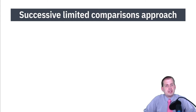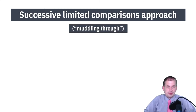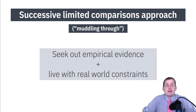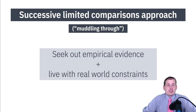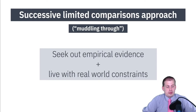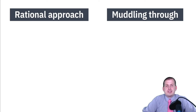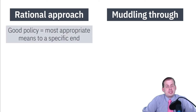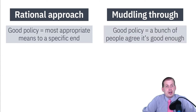What Lindblom argues instead is that we need to rely on successive limited comparisons — what he calls muddling through. You seek out empirical evidence, figure out what stakeholders want, try to determine willingness to pay and marginal cost, then start working with real-world constraints. If you figure out something is wrong, make adjustments, fix it, and keep living with real-world constraints. You go through that process over and over again.